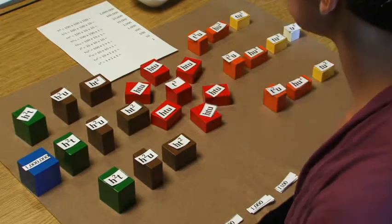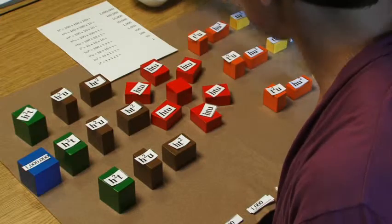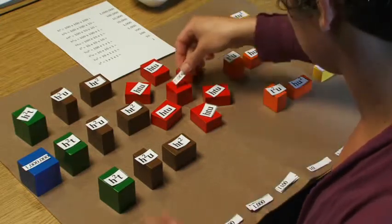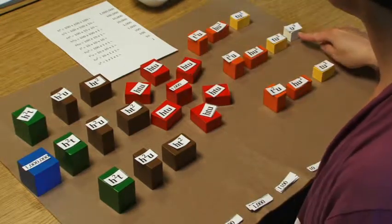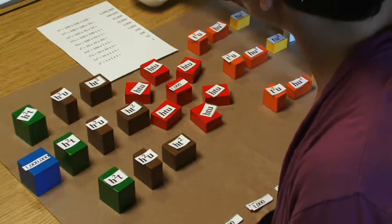Our tens cubed, or 10 times 10 times 10, is 1,000. And our units cubed is 1 times 1 times 1, which equals 1.